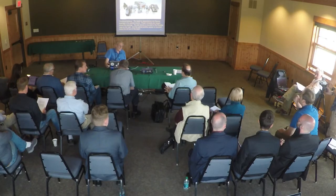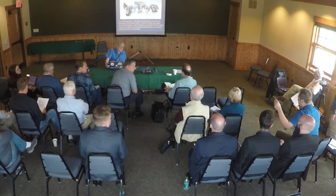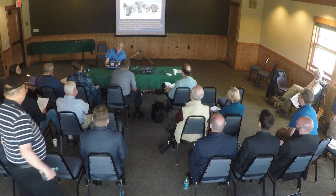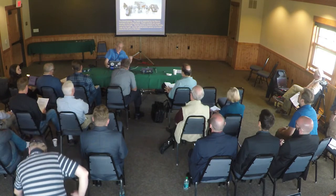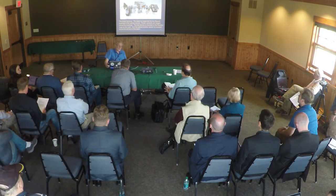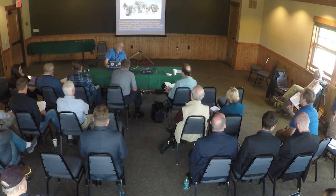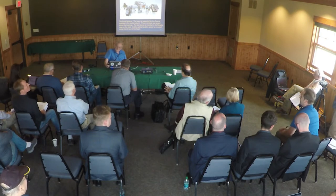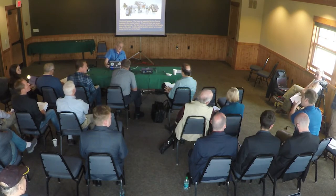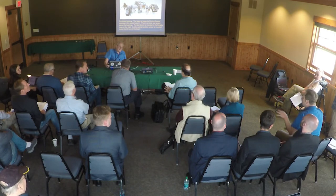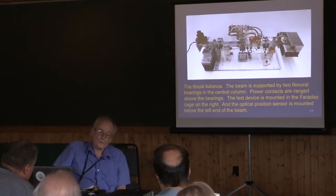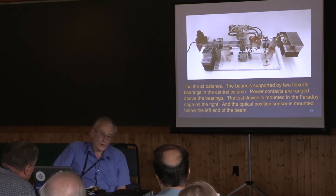For eddy-current damping, the magnets are stationary on the support platform. The metal blades are the things that move when the balance is displaced. If the thrust device produces some magnetic fields, that could interact with the permanent magnets on the supporting structure. But there's an easy way to eliminate that — all you have to do is reverse the direction of the device on the other end of the beam in the Faraday cage. The electromagnetic fields are primarily from the power leads. They don't change when you reverse the direction of the device.